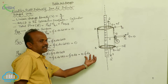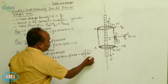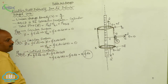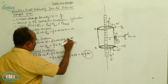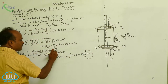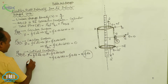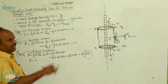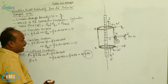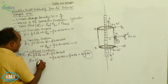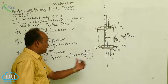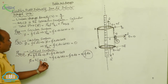The closed integral of dS represents the total area of the lateral surface of the cylinder. The total lateral surface area of the cylinder is 2·pi·r·l. Therefore, the flux through the lateral surface equals E into 2·pi·r·l.